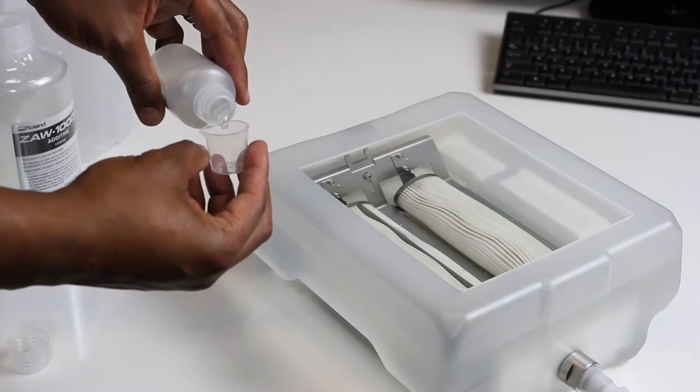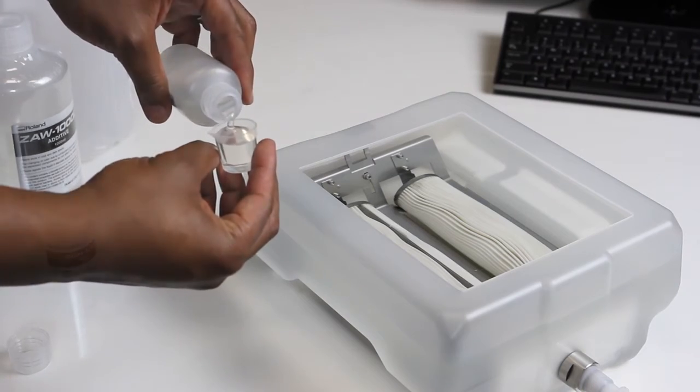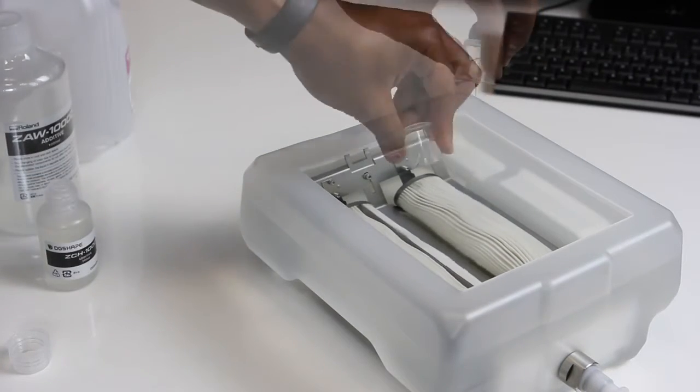Finally, using the small measuring cup, pour in 12.5 milliliters of chelate agent.